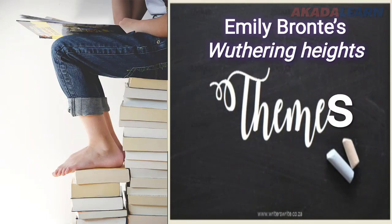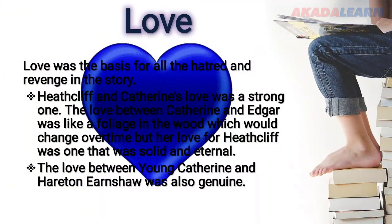Our first theme is love, because all the hatred and revenge in the story was caused by love. Love was the basis for all the hatred and revenge. Heathcliff and Catherine's love was a very strong one — it was that love that caused the hatred Heathcliff had. The love between Catherine and Edgar was like a foliage in the wood, something that would change over time; she just admired him. But her love for Heathcliff was solid and eternal.